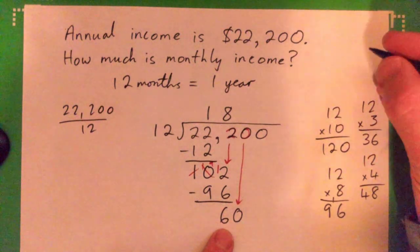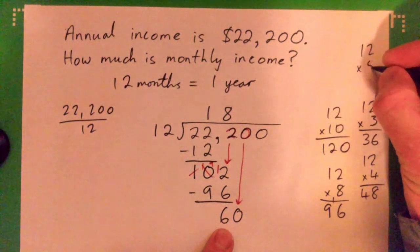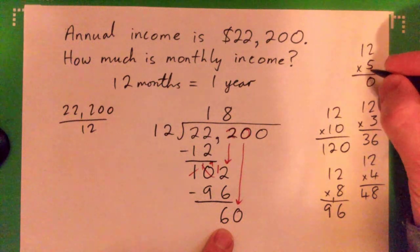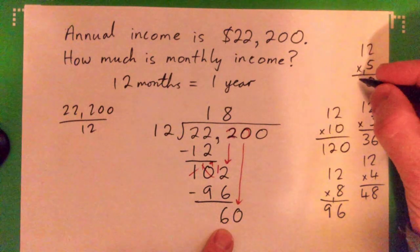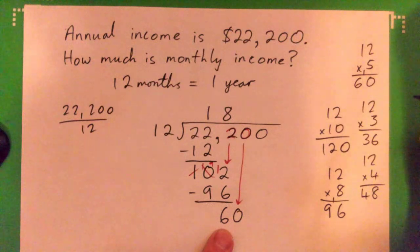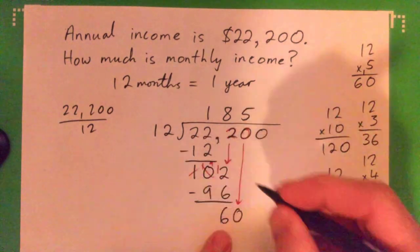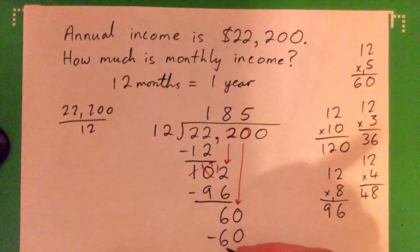Yeah, maybe 5? 12 times 5: 5 times 2 is 10, put down 0, carry 1, 5 times 1 is 5 and 1 is 6, 60. Yeah, maybe 5, good idea. 5 times 12, subtract, and we get 0.